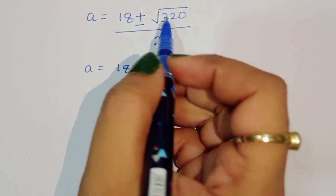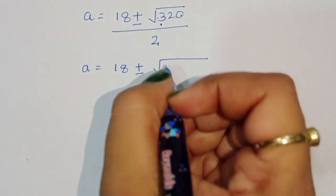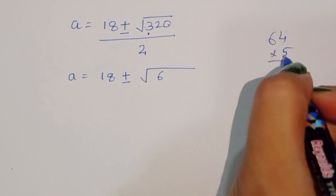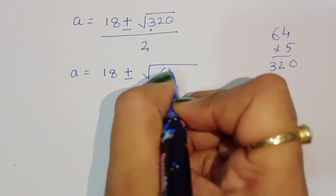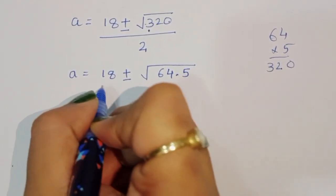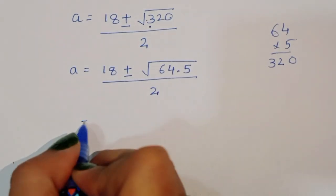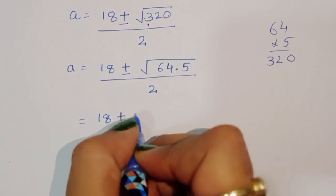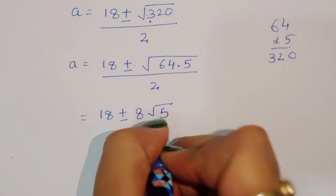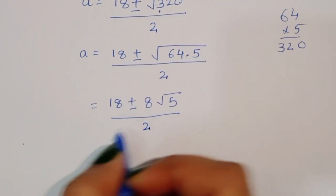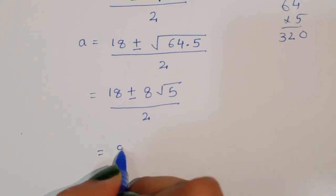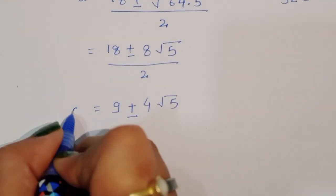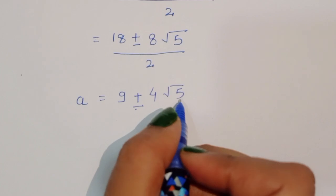Now we simplify square root of 320. The factors of 320 are 64 times 5, so square root of 320 is equal to 8 square root of 5. Dividing by 2, we get 18 plus or minus 8 square root of 5 over 2, which simplifies to 9 plus or minus 4 square root of 5. So a is equal to 9 plus or minus 4 square root of 5.